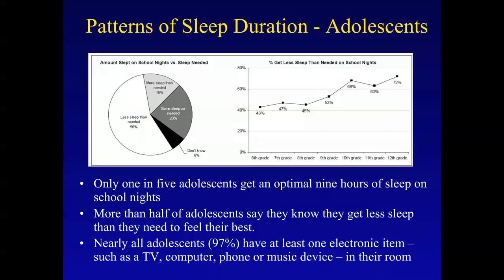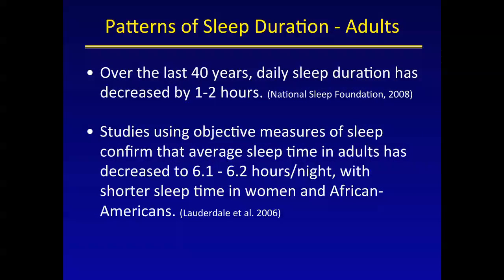Older children in the lower quartile of sleep were more likely to share a room or bed, more likely to drink a caffeinated beverage during the day, and more likely to have a TV in the room where they sleep — some really interesting opportunities for intervention. Among adolescents, the National Sleep Foundation data shows the amount slept on school nights versus the amount adolescents reported they needed. 56 percent said they slept less than they needed, and about 72 percent of high school seniors reported getting less sleep than needed. Only one in five adolescents gets an optimal nine hours of sleep on school nights, and almost all have multiple electronic items in their bedrooms.